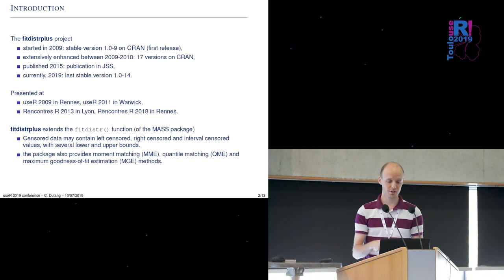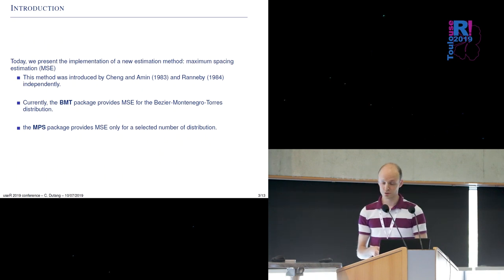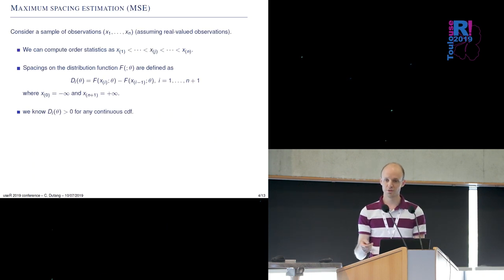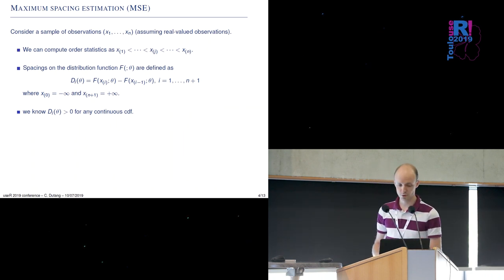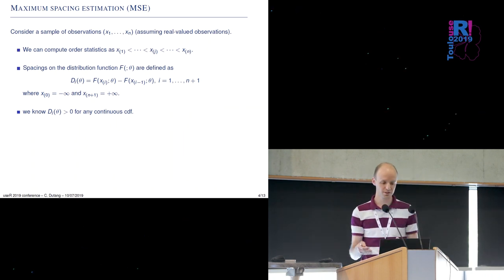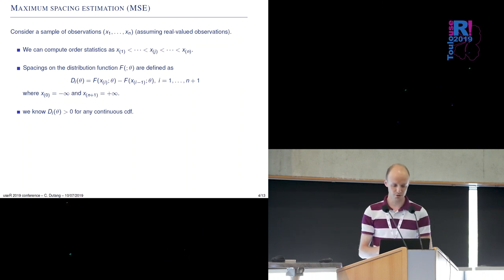And just maximum likelihood and the new estimation method we want to implement is maximum spacing estimation which is quite old that we found in the 80s and currently there are only two packages on CRAN that allow to fit that method and only for a selected number of probability distribution. And you know in fitdistrplus we can fit a large range of probability distribution so we consider actually a data set that are assumed real value so we can start it exactly and we compute spacing that is the difference in terms of cumulative distribution given a parameter value.